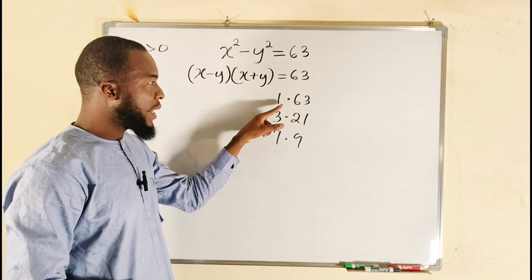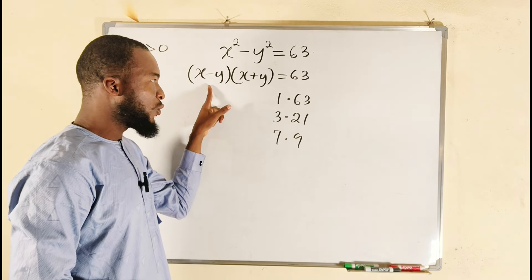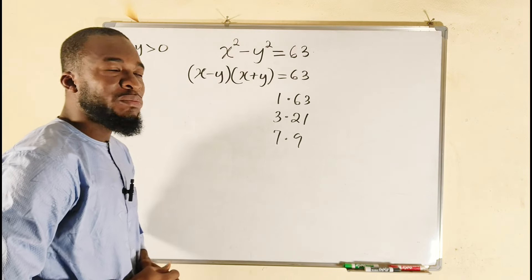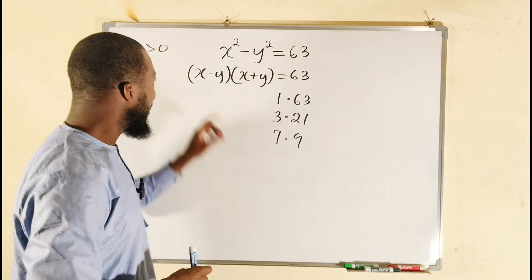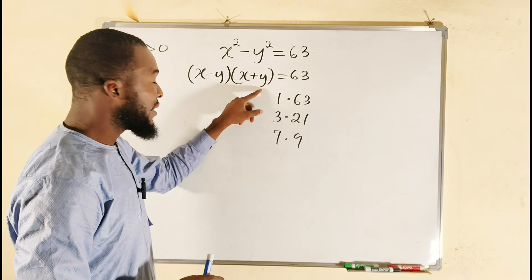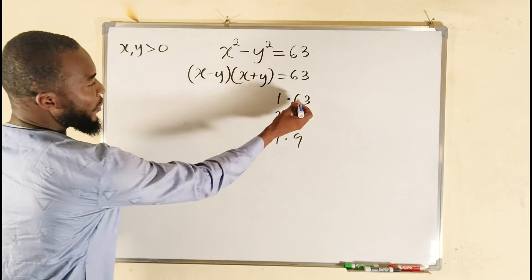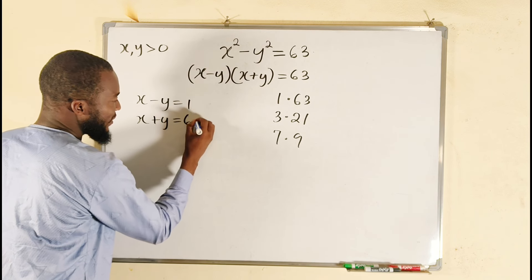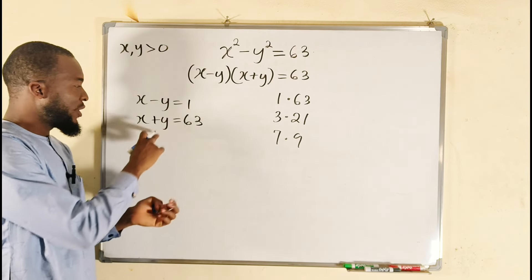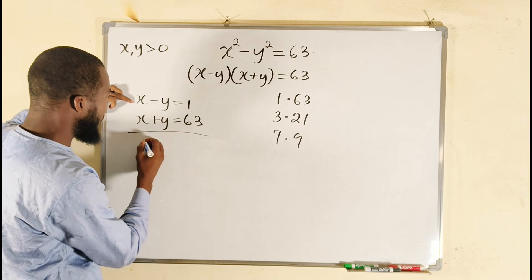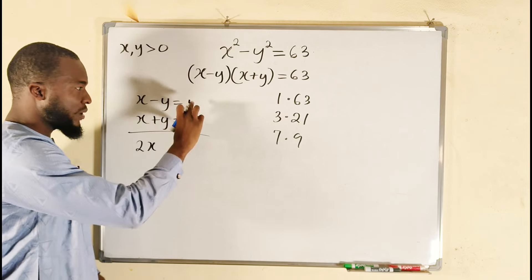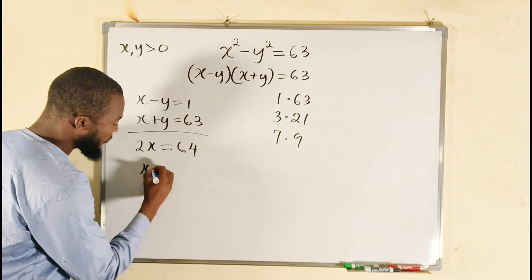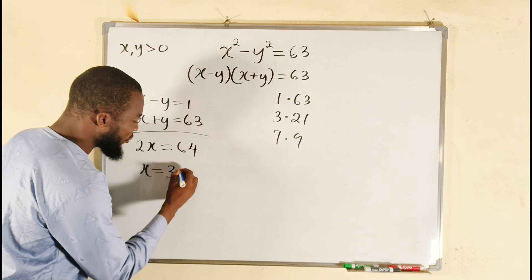Let's start with the first pair, where the first factor is 1 and the second is 63. I choose this assignment because since both x and y are positive, x minus y will always be less than x plus y. For example, if x is 5 and y is 3, then 5 minus 3 is 2 but 5 plus 3 is 8 — so x plus y is always greater. From this first pair we have x minus y equals 1 and x plus y equals 63. Adding these two equations eliminates y, giving us 2x equals 64, so x equals 32.